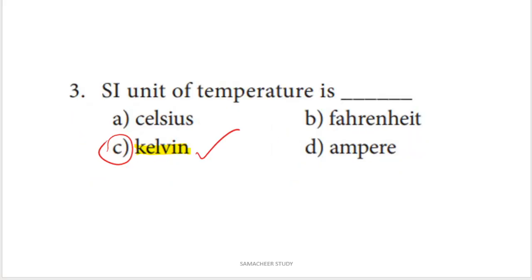Next question: what is the SI unit of temperature? The options include Celsius, Fahrenheit, and Kelvin. The SI unit of temperature is Kelvin, so option C is the right answer. In general day-to-day use, we use Celsius or Fahrenheit, but the SI unit is Kelvin.